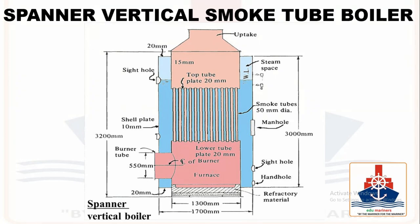In this boiler no stays are required for the outer shell or the internals. Only the flat tube plates require stay tubes for support, and this is done by stay tubes of plain sections expanded and then welded into the tube plates. This type of boiler can also be used as a composite boiler.